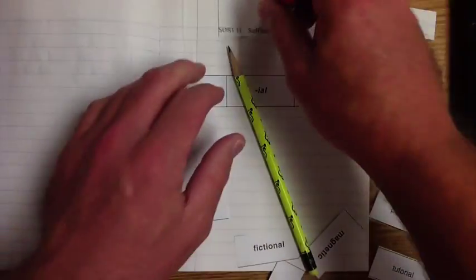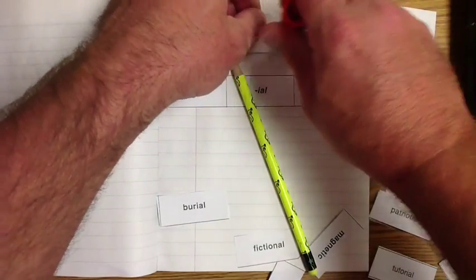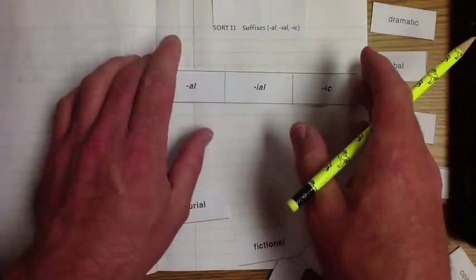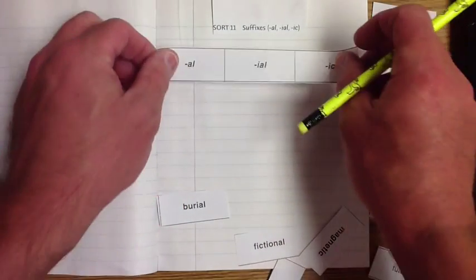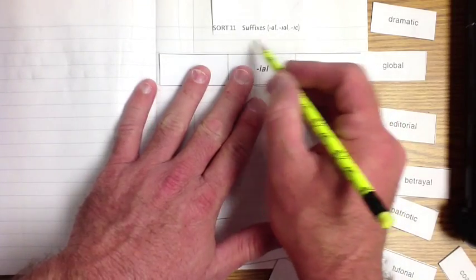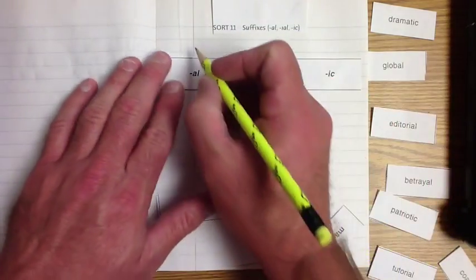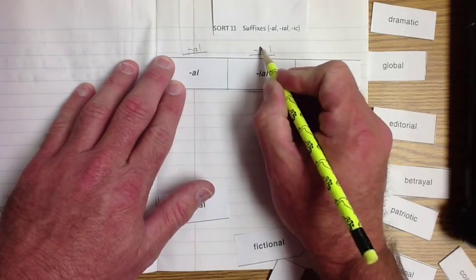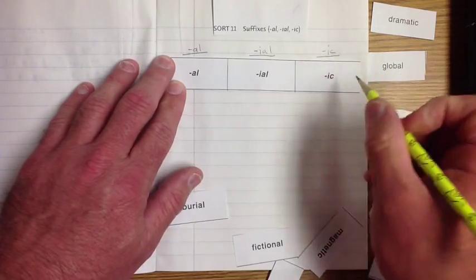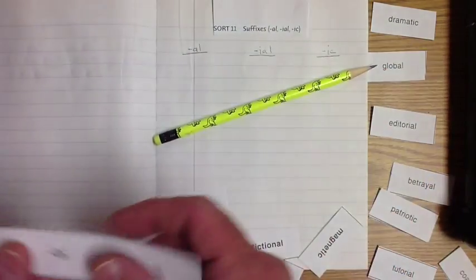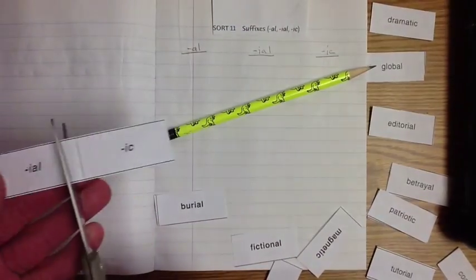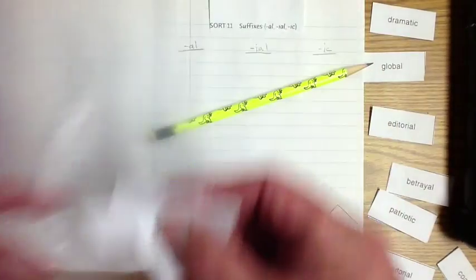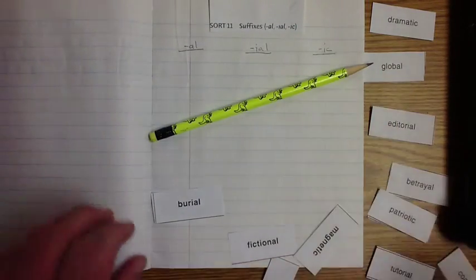Let's get our glue stick. First thing we need to do is take this guy here, put a little glue on the back, take our exemplar paper or our explanation of what we're doing, and glue that to the top of the page. Do not glue your exemplars. We need to write these out. I'm going to go -al, -ial, and then -ic. We can cut our exemplars out and put them in our zip top bag.